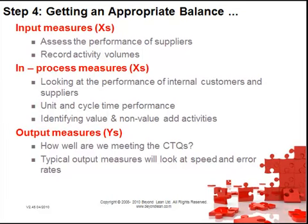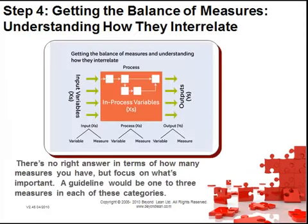It's all about getting an appropriate balance. For input measures: assess the performance of suppliers and record activity volumes. For in-process measures: look at the performance of internal customers and suppliers, unit and cycle time performance, and identify value and non-value adding activities. For output measures: assess how well we are meeting critical to qualities and look at speed and error rates. Focus on what's important — a guideline would be 1 to 3 measures in each of the categories of quality, cost and delivery.